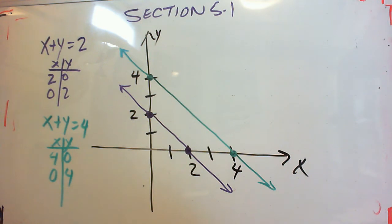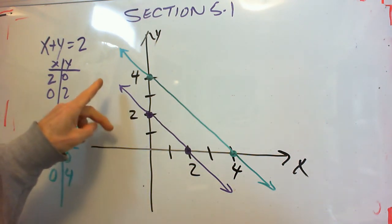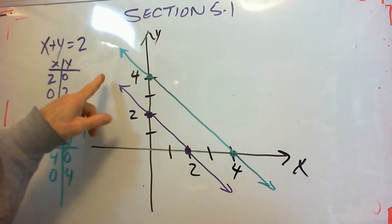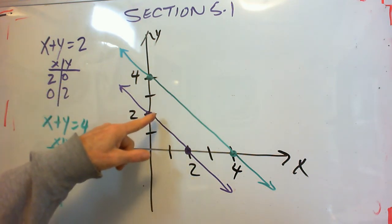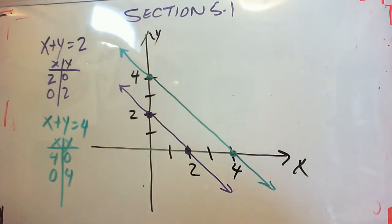So I've plotted both these lines and I've just used the intercepts. When x is 0, y is 2. When y is 0, x is 2. And then for the other line I got the intercepts 4, 0 and 0, 4. So it shouldn't take too long to graph these. And when we graph them, we see there is no point of intersection.